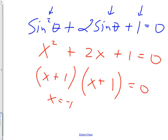Since I made the swap at the beginning and changed sine x to plain x, I've got to now make the problem harder again and say x wasn't really x — it was sine x. So I now have sine x equals negative 1. I've got to put that over 1 on the unit circle.